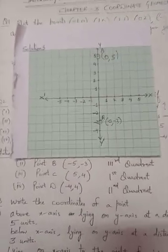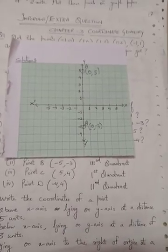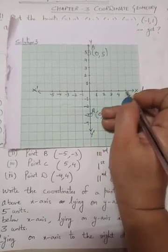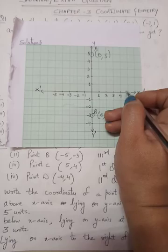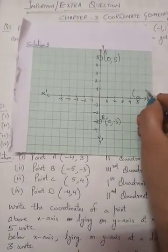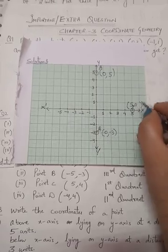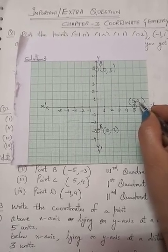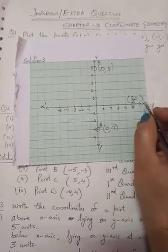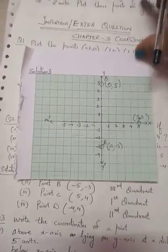Lying on the x-axis to the right of origin at a distance of 5 units. The right of origin is the positive x-axis. On the x-axis, the y-coordinate is 0, so this point is (5, 0). This point is not lying in any quadrant — it lies on the x-axis.